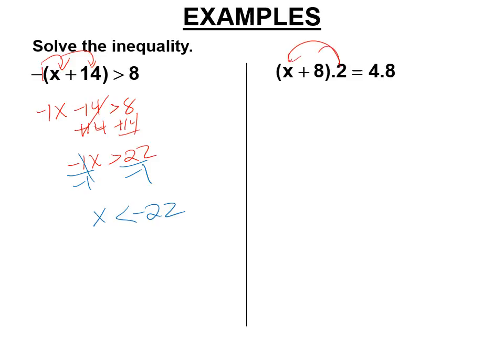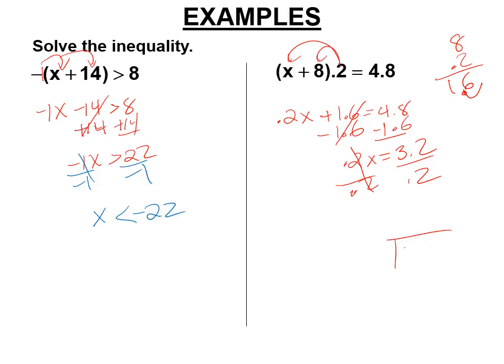This is multiplying by 0.2. So it's 0.2x. 8 times 2 is 16. 8 times 0.2, or 2 tenths is 1.6. Equals 4.8. Let's subtract 1.6 from both sides. 0.2x equals 3.2. Divide both sides by 0.2. So let's do that. 3.2 divided by 0.2. Move the decimal. It's 32 divided by 2 is the same thing. I'm getting x is 16.